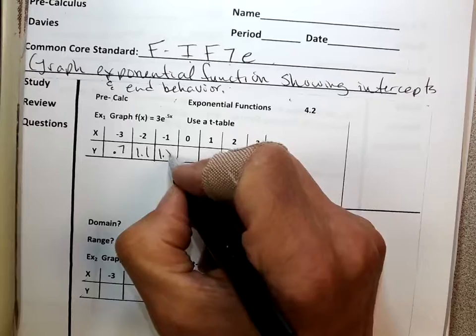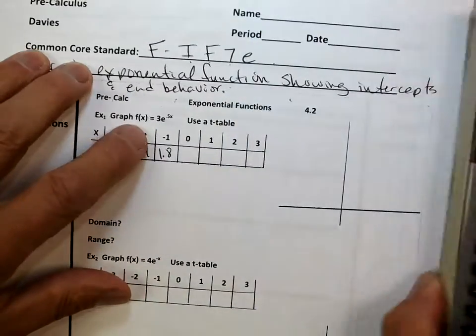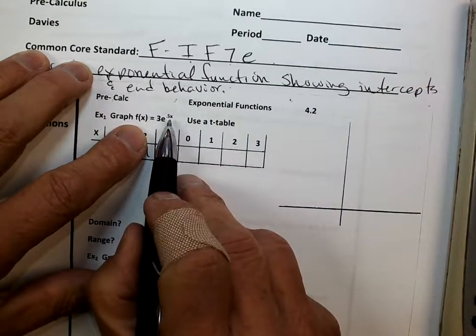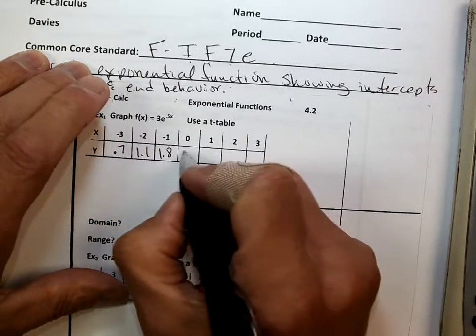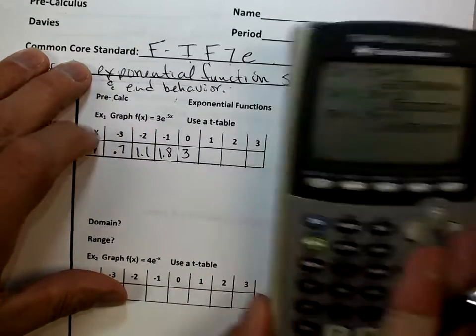3, and I'm going to go E to the 0.5 times negative 1, and I get an answer of about 1.8. So it's slowly getting bigger, isn't it? 0, I don't need to plug in 0, I know that's going to be 3, because anything with 0 power is 1, and 3 times 1 is 3.